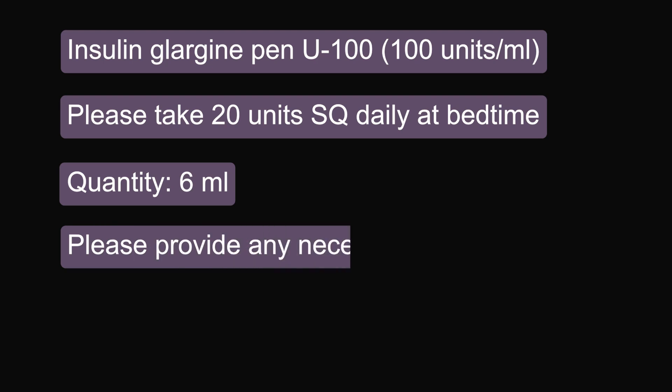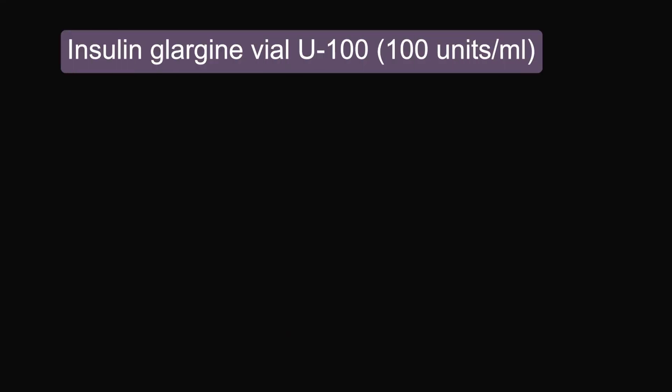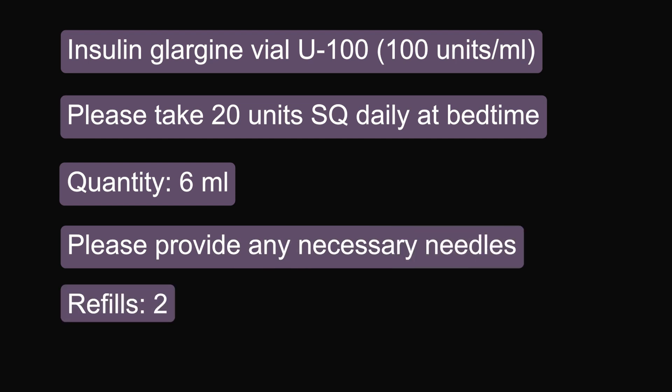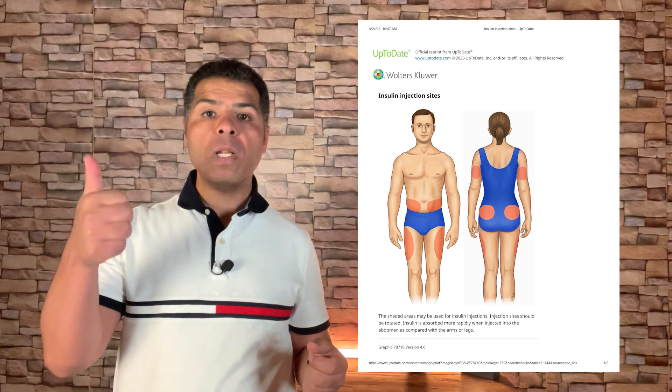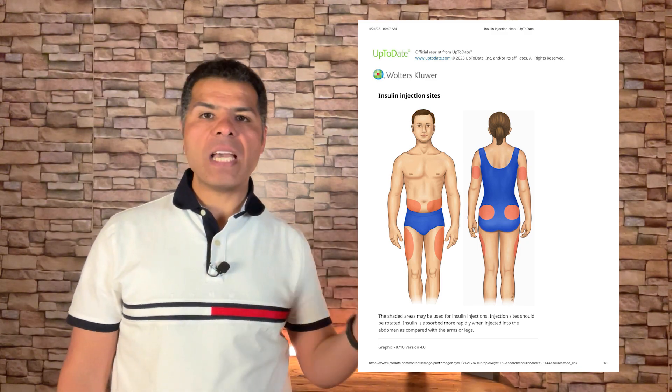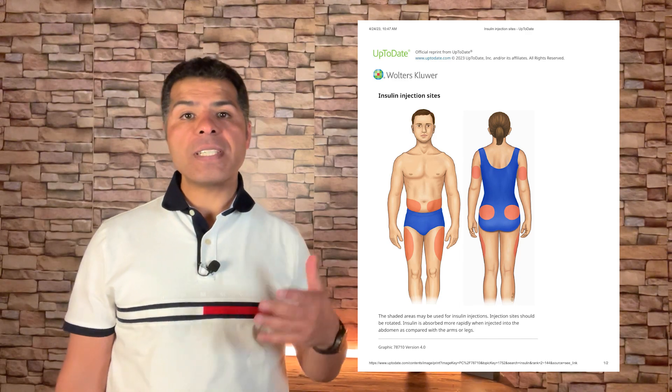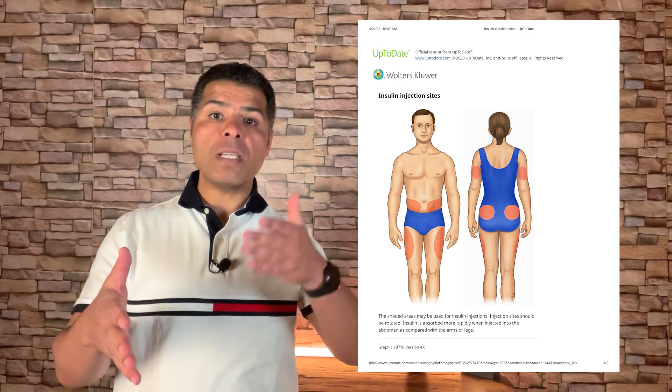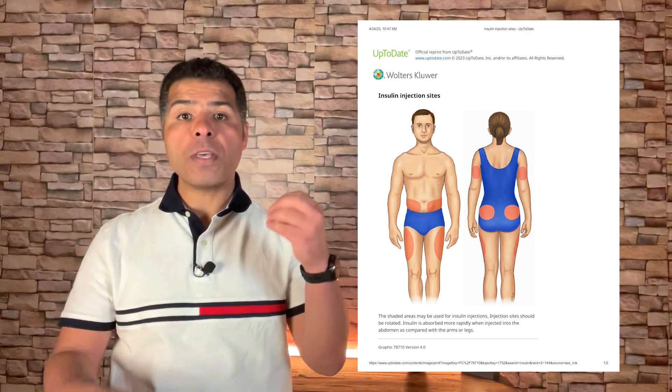When writing an insulin prescription, specify whether a vial or pen, include the concentration, the amount, and any needed needles and syringes. Insulin can be injected into the abdominal wall, leg, arm, or buttocks. Human insulins are absorbed fastest from the abdominal wall, slowest from the leg and buttock, and at an intermediate rate from the arm. For example, pre-meal regular human insulin should be injected into the abdominal wall for fastest absorption.